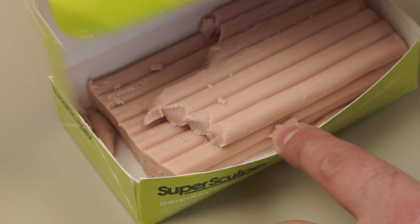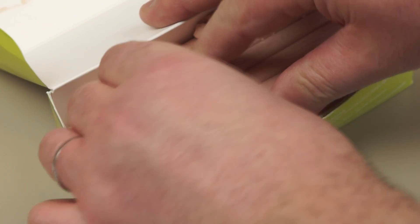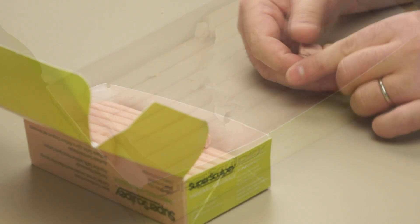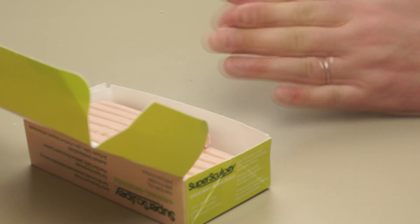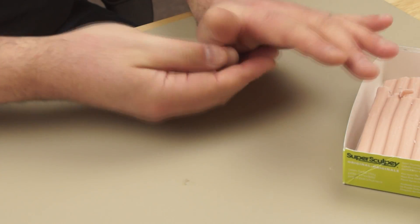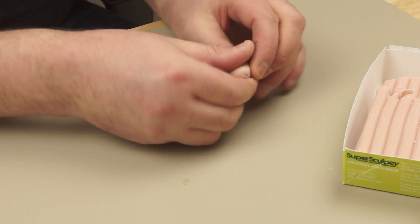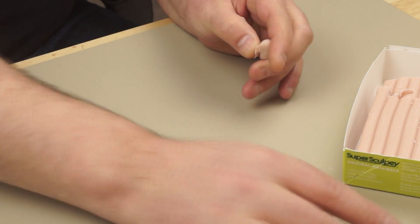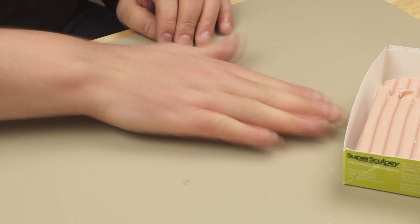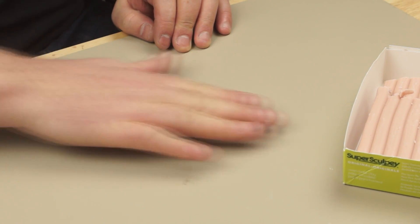As with previous projects to make the master I'm using polymer clay and I've softened this up by warming it and kneading it. Once I'm happy that's pliable and soft I'm going to take a small piece off and then roll it into just a rough worm shape.